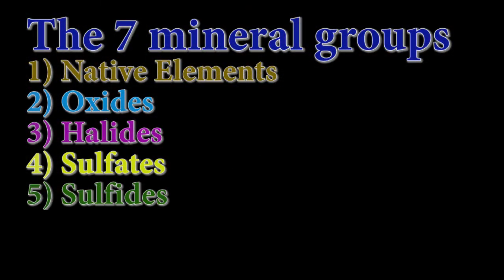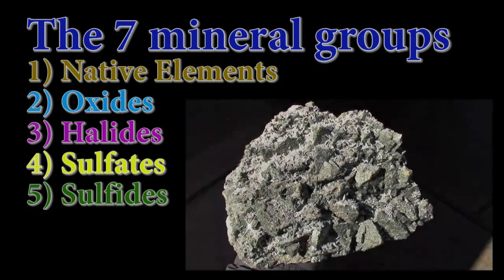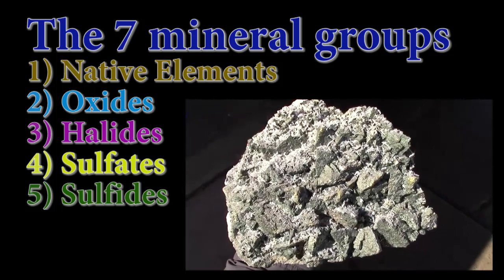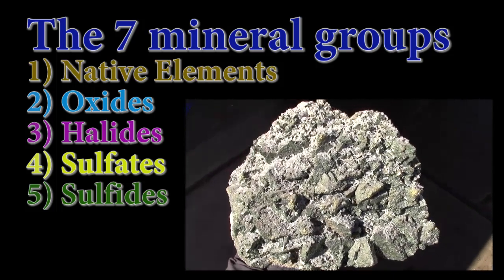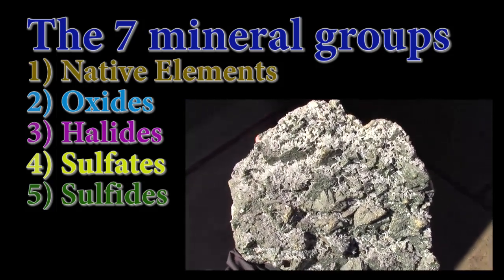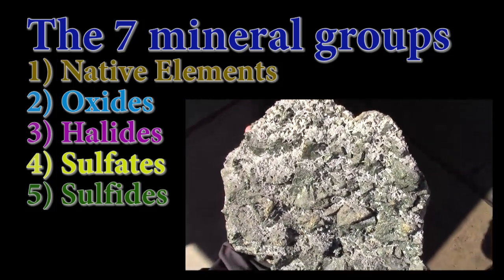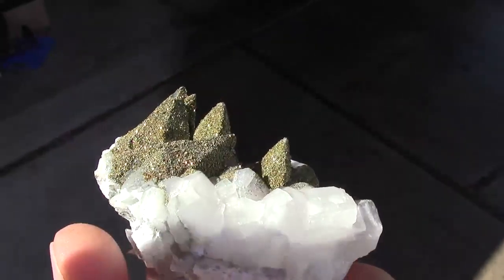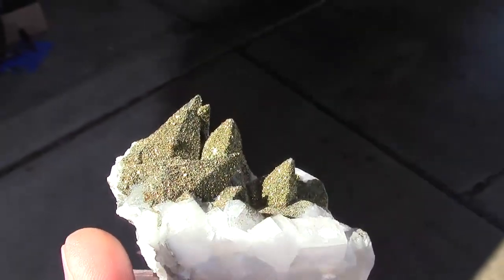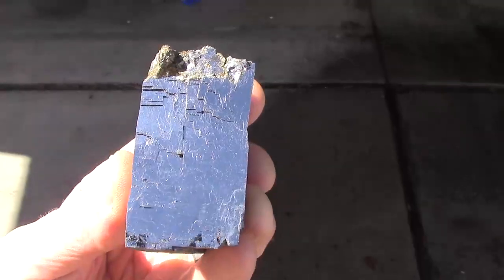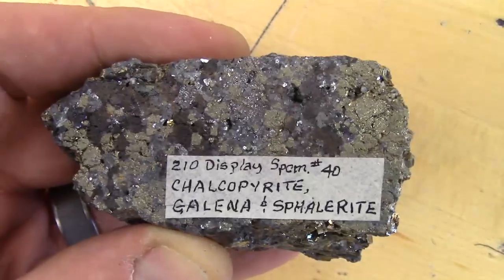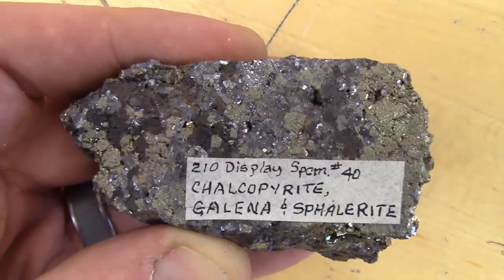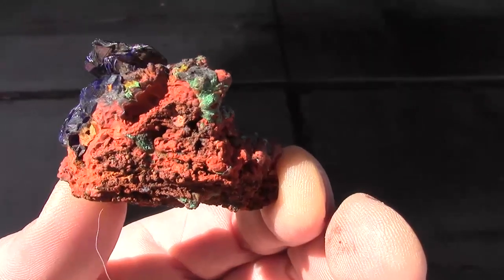The fifth group is the sulfide minerals, which are those with the reduced sulfur S²⁻ anion. Ferrous iron, in the absence of oxygen, loves to combine with the sulfur anion to make pyrite, or fool's gold. Other common sulfides are galena, sphalerite, chalcopyrite, and cinnabar.